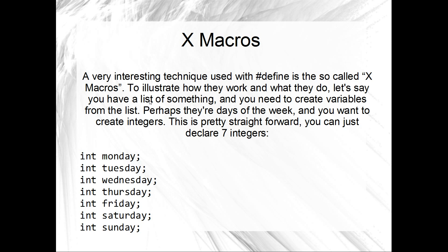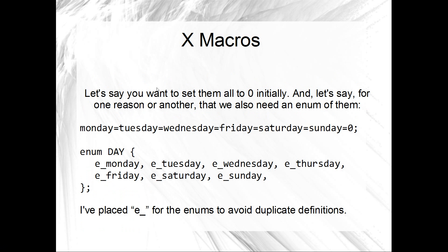Suppose you've got a list of items. My example is pretty lame — it's just the days of the week — but you've got a list of items. Maybe it's something like the days of the week, or it could be a longer list with hundreds of items. Days of the week is a simple example. So you want to declare integers with each of the items in your list. You'd just go int Monday, int Tuesday, int Wednesday, int Friday, int Saturday, and so on. Let's say also that a little bit after that, in your project, you've got to set all of these integers to zero, and then maybe later on, for some other reason in your project, you also want an enum of these days — just the same list, used a few different times.